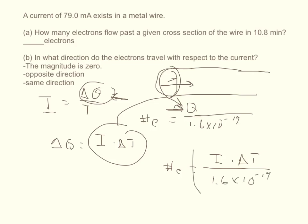So when you plug in your numbers, make sure you change 79 to 79 times 10 to the minus 3, so you convert it from milliamps to amps. And then make sure you change your delta T from 10.8 to 10.8 times 60, so you convert it from minutes to seconds. And when you do that, you get that the number of electrons is equal to 3.199 times 10 to the 20th, which I just plug in 3.2 times 10 to the 20th.